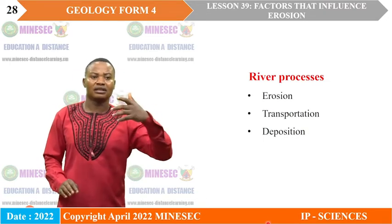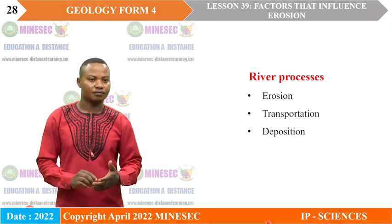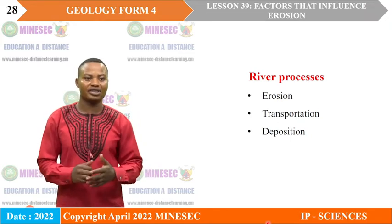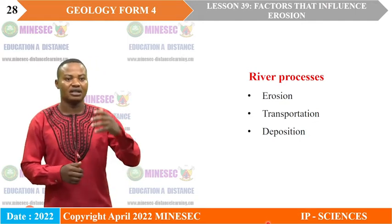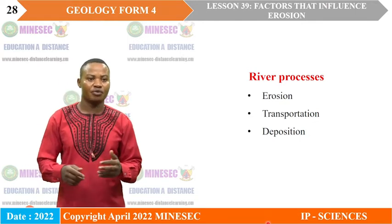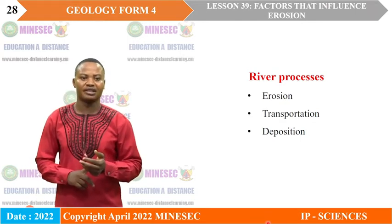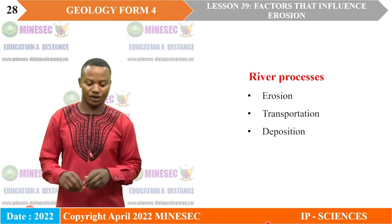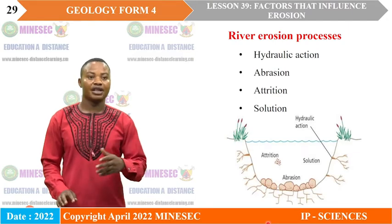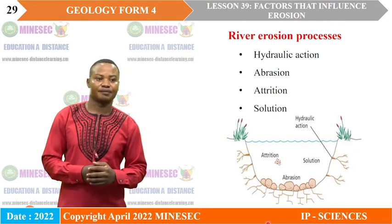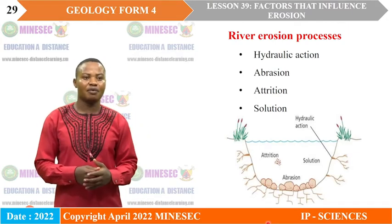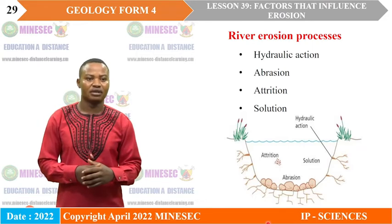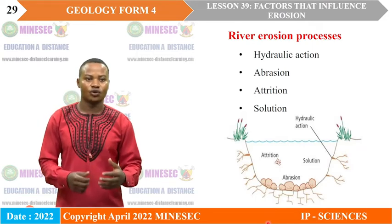River processes are grouped into three: erosional processes, transportational processes, and deposition. For erosional processes, we have hydraulic action, abrasion, attrition, and solution — four erosional processes in the river. Hydraulic action is the removal or picking up of material from the river bed or river bank by the force of water or by water velocity.